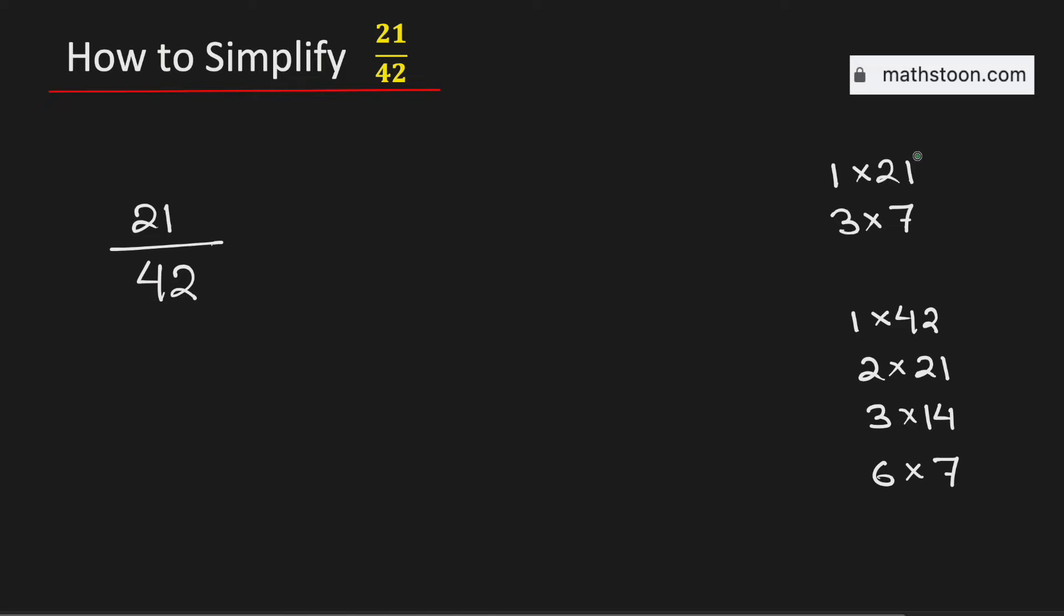See that 21 is the greatest number which is present in both these lists. Therefore the greatest common factor of 21 and 42 is 21.